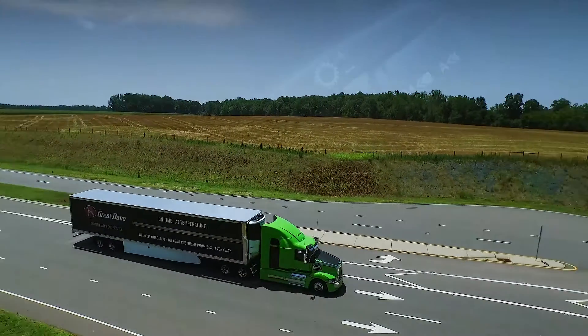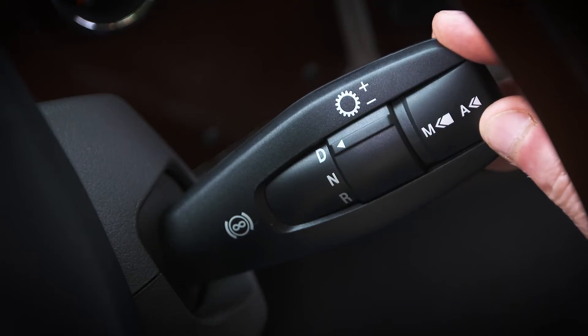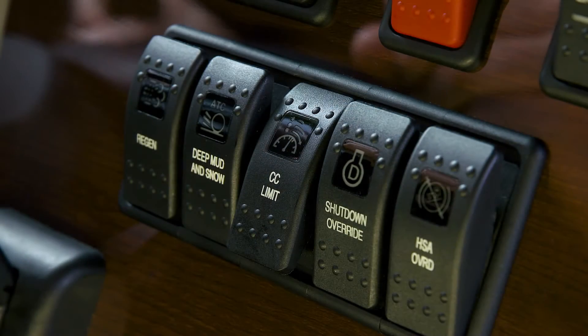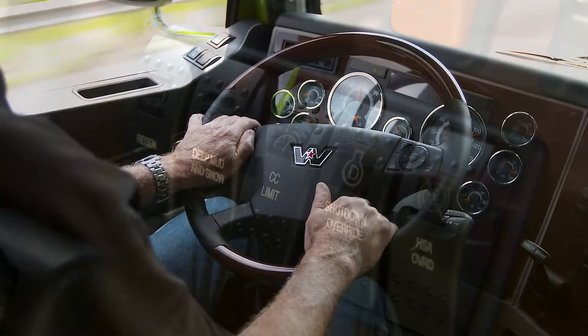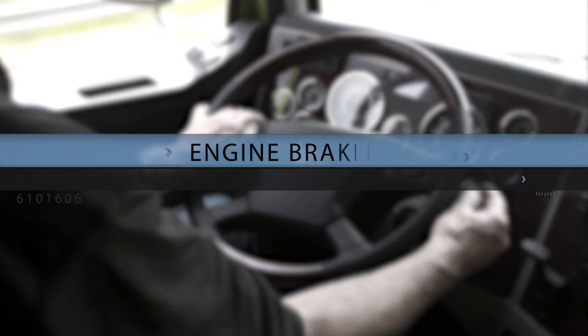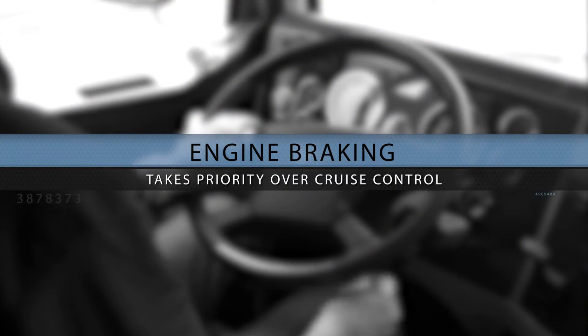Manual engine braking with the shifter stock will always override the CC limit switch. If manual engine braking is used, cruise control will be cancelled and engine braking will slow the vehicle down.